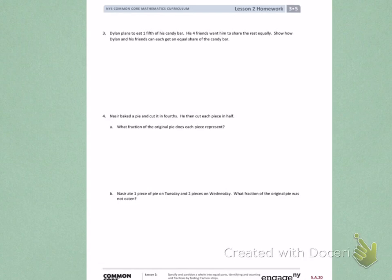Number 3. Dylan plans to eat one-fifth of his candy bar. His four friends want him to share the rest equally. Show how Dylan and his friends can each get an equal share of his candy bar.